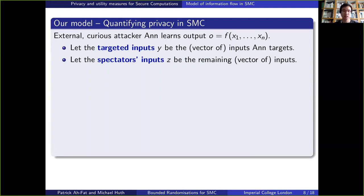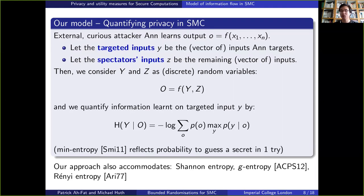Let's call z the spectator's input. Then, by considering the output o of f as a composition of random variables, we can quantify the information learned on y with the conditional entropy of y given the output o. Although we focus on the min entropy in this work, our approach also accommodates other entropy measures such as Shannon entropy, Rényi entropy and the whole family of g entropies.